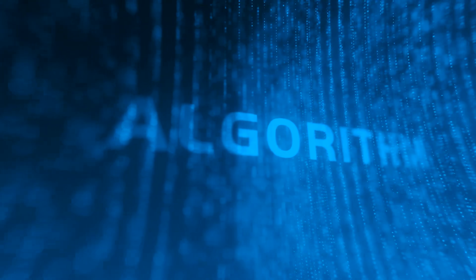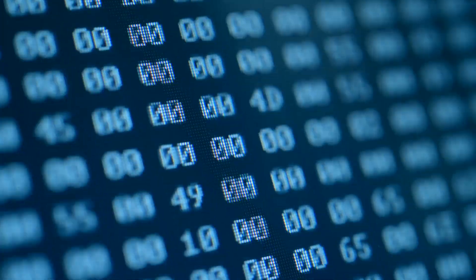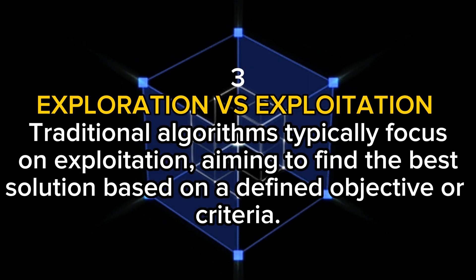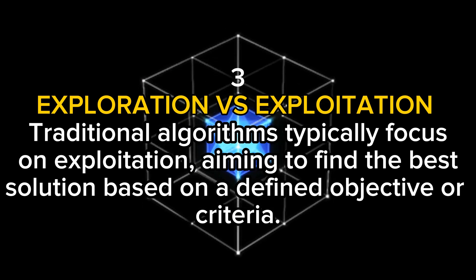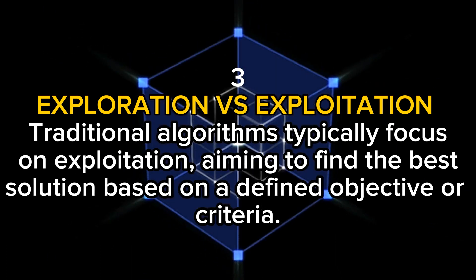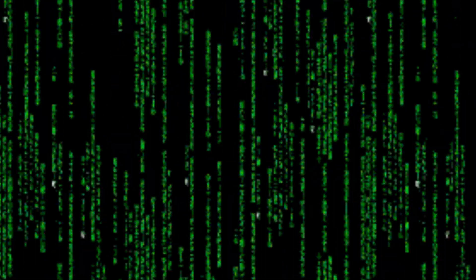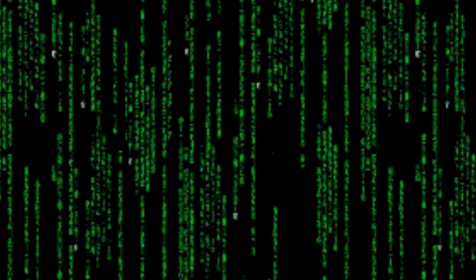In future videos, we will consider how these nature-inspired algorithms individually approach a particular problem, proving that they have a more general approach and can solve a wide range of problems. Third, exploration vs. exploitation: traditional algorithms typically focus on exploitation, aiming to find the best solution based on a defined objective. Nature-inspired algorithms, especially meta-heuristics, strike a balance between exploration and exploitation — they explore the search space to discover new potential solutions and then exploit promising regions to refine solutions iteratively. Generally, nature-inspired algorithms are used to find solutions to complex problems that might take a computer millions or billions of years to solve using traditional algorithms.